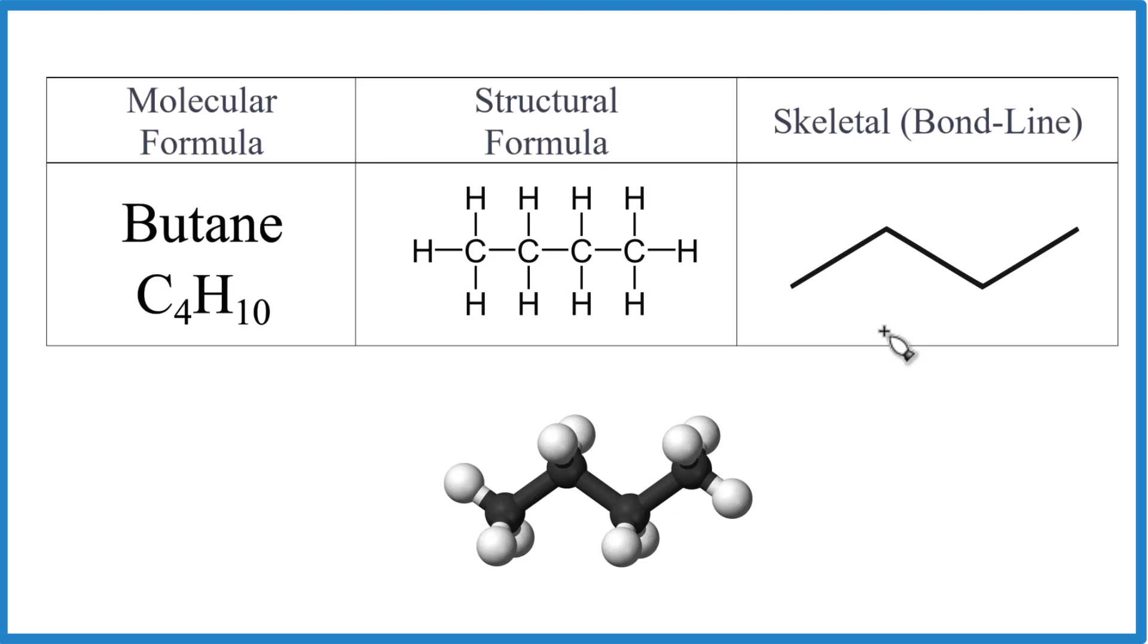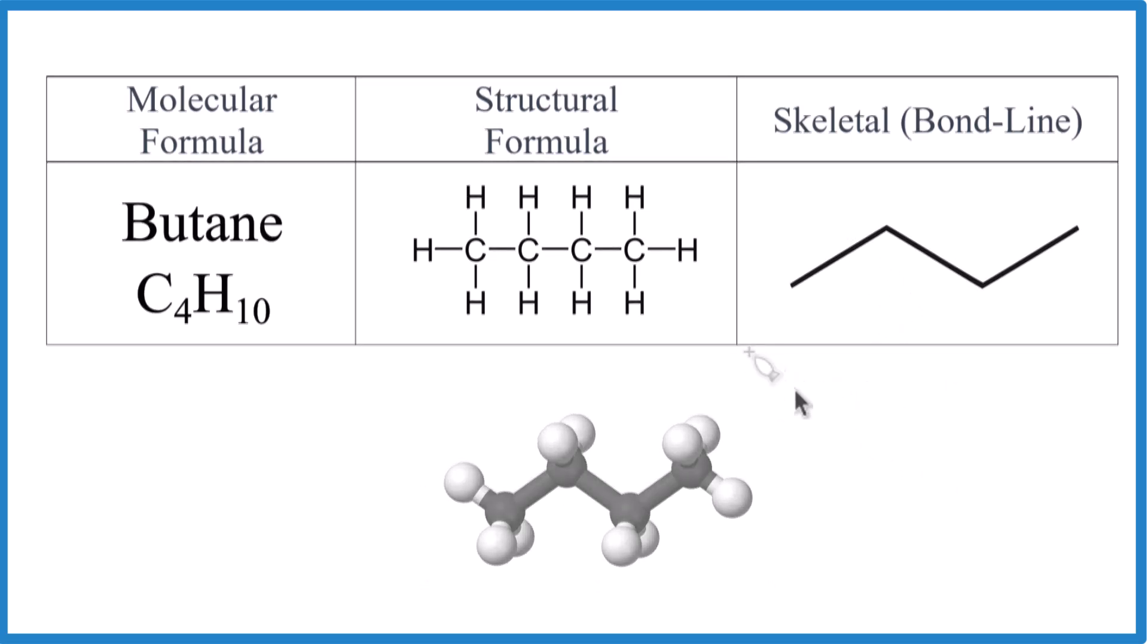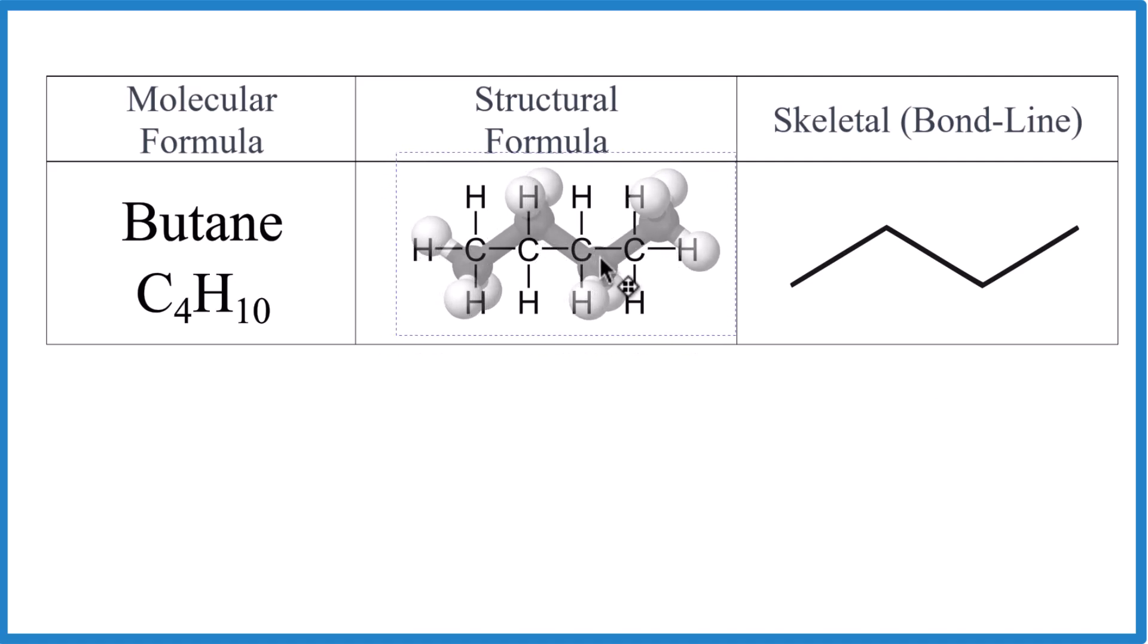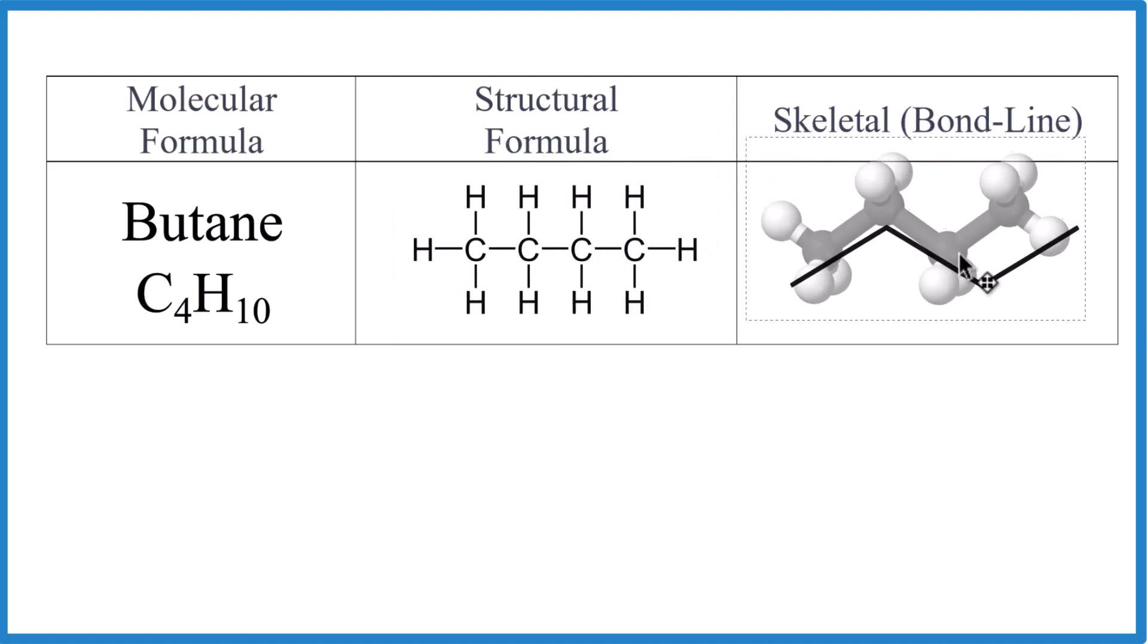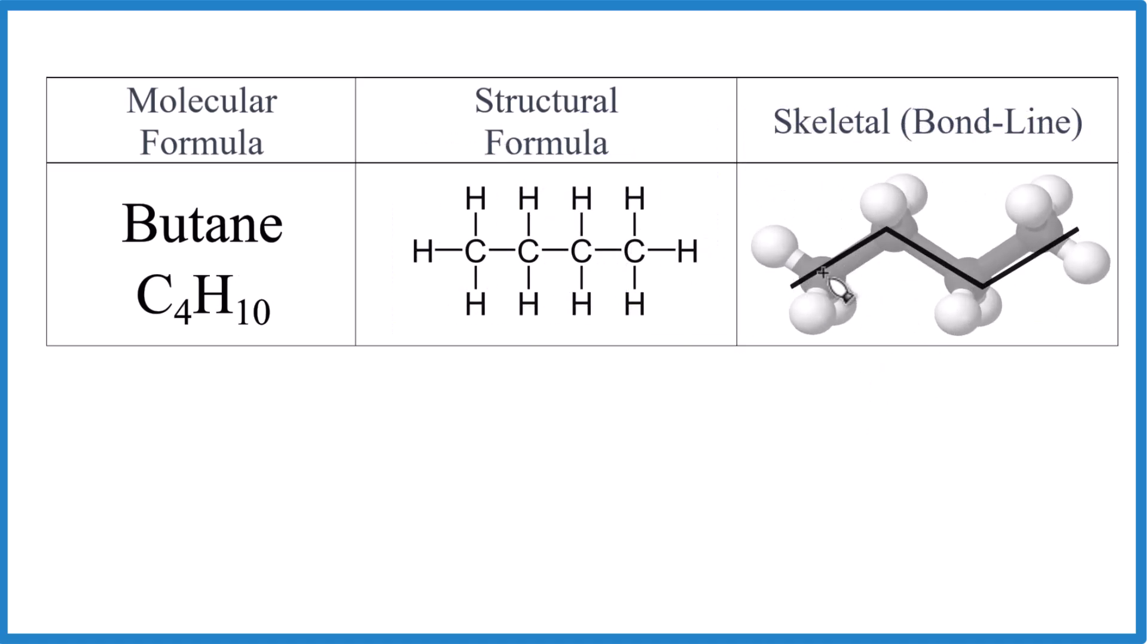Let's do some overlays real quick so you can visualize this. If we put our butane model over here, you can see one, two, three, four with the hydrogens around. You can also put it over here. One, two, three, four carbons and the hydrogens: three around this one, two around this one, two, and three. So now you know the difference.